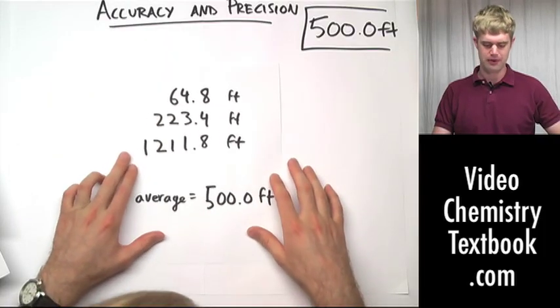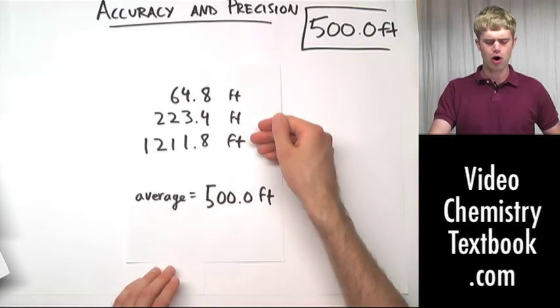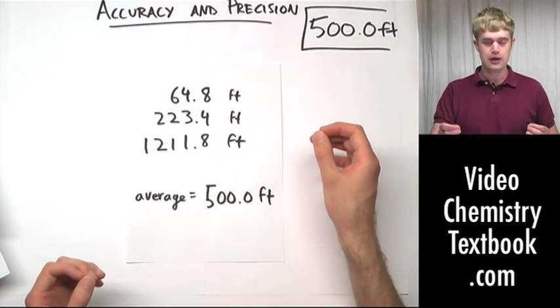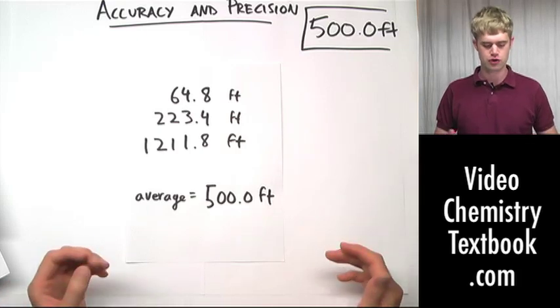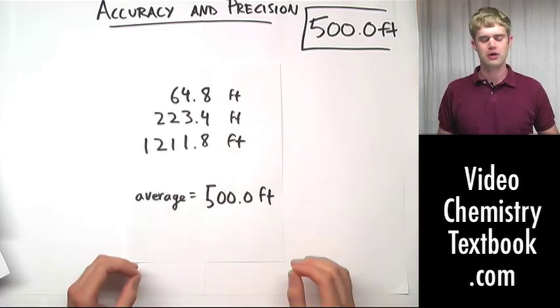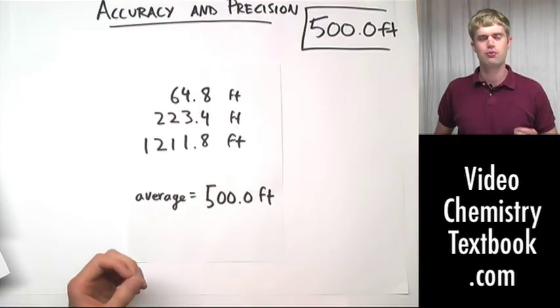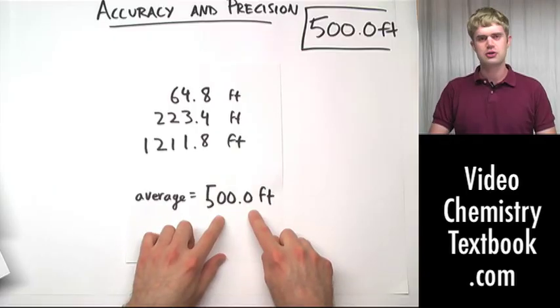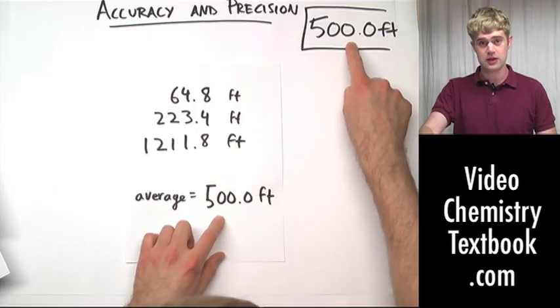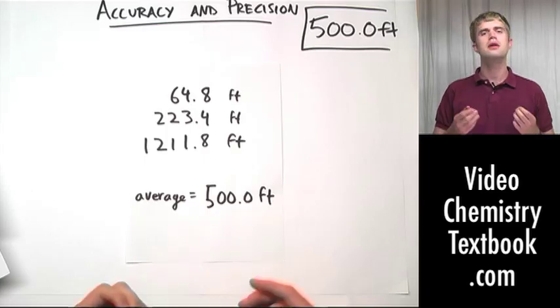Here's a hypothetical, maybe group four's examples. Their numbers, as you can see here, are all over the place. They range everywhere from 64.8 to 1211. But when we add the three of them up together and take the average, we get exactly 500.0 feet. This seems like an accurate answer because the actual number really is 500.0 and their average is also 500.0. But here's the thing.